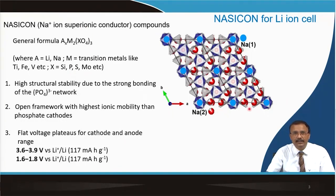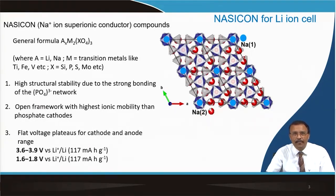This type of material has very high structural stability mainly due to the strong bonding of the phosphate (PO4)3 network. They also have a relatively open structure — sodium is not very structurally integrated. This yields higher ionic mobility than phosphate-based cathodes like lithium iron phosphate, because of their framework structure.